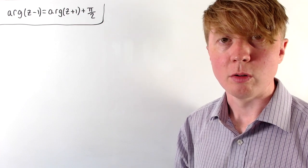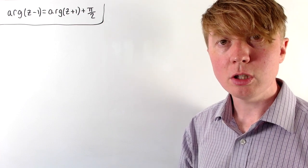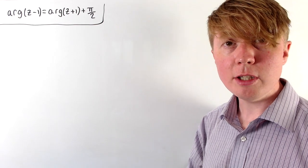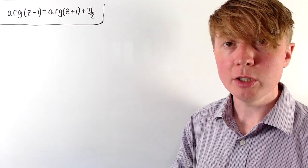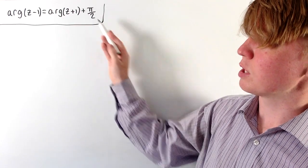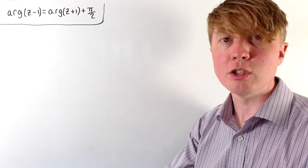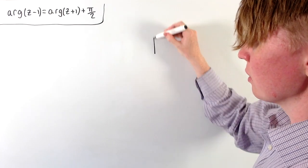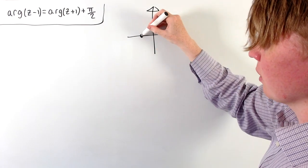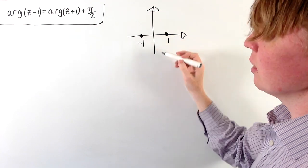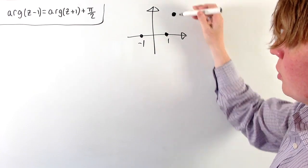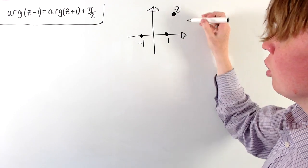We're going to solve this equation, where we need to find all complex numbers z which satisfy the equation. This is a geometric problem, so we'll start by drawing a picture, just to get a feel for what the argument of z plus and minus 1 actually look like. If we have our Argand diagram, we can draw on the points 1 and negative 1, and let's imagine we've got a point z with positive imaginary part.